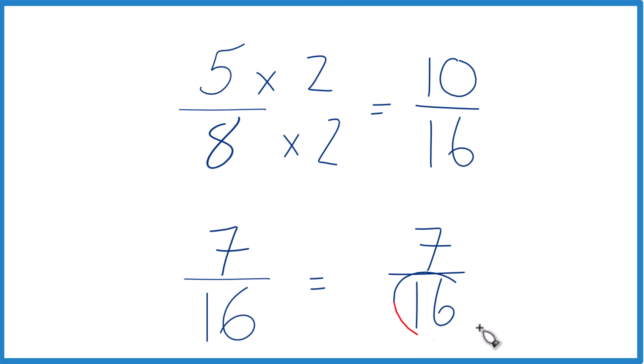Now, since we have the same denominators here, we can compare the numerators. And you see that 10, that's bigger than 7. So, 10 sixteenths, that's larger than 7 sixteenths. Right? 3 sixteenths.